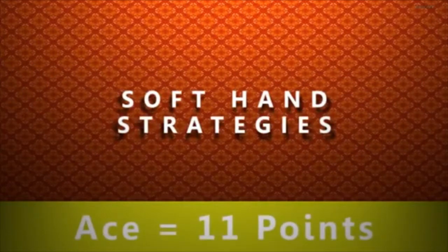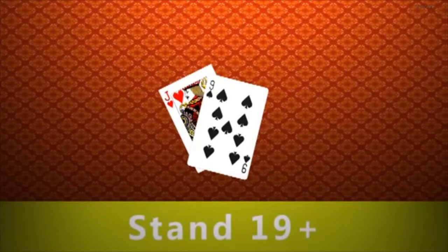A soft hand contains an ace that is counted as 11. Always stand on a soft hand of 19 or greater. There's a lot of risk of going over 21.